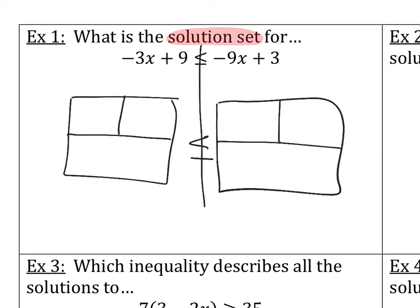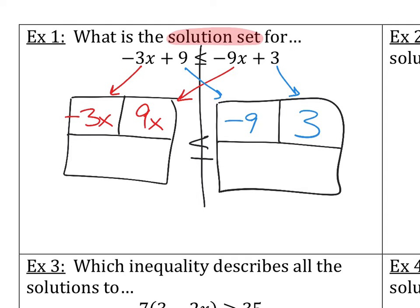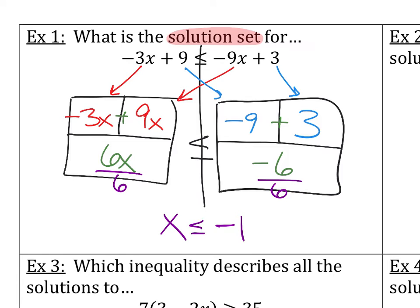I'm set up — that's important. Now drag and drop: negative 3x, positive 9x, negative 9, positive 3. Combine like terms: negative 3 plus 9 is 6x, and negative 9 plus 3 is negative 6. Divide both sides by 6. My solution set is x less than or equal to negative 1. Does it need to flip? No — the number you divide by needs to be negative for a flip. We're dividing by positive 6, so no flip.